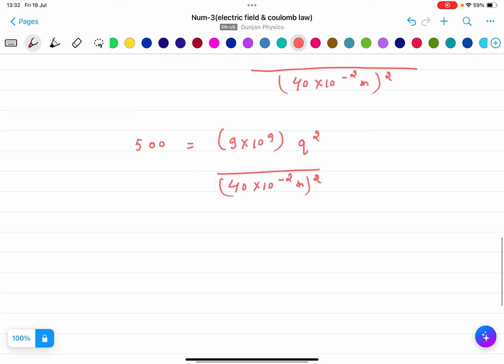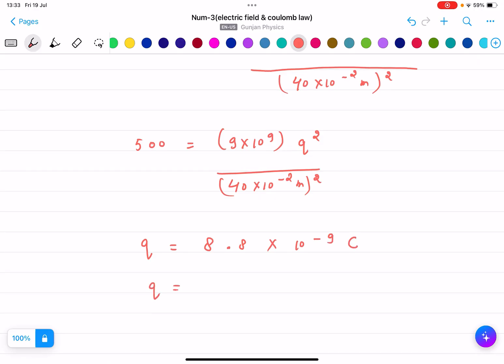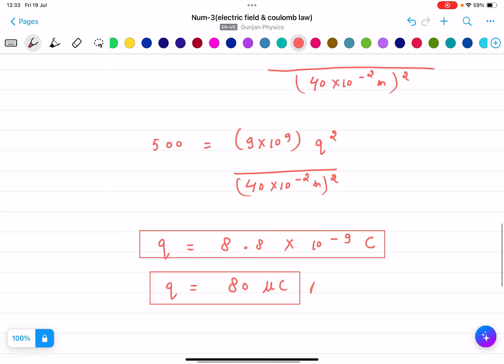We will find out the value of q from this formula. According to me, q equals 8.8 into 10 to the power minus 9 coulombs, which means q equals 80 microcoulombs. You can write like this or like this as well. Both answers are correct.